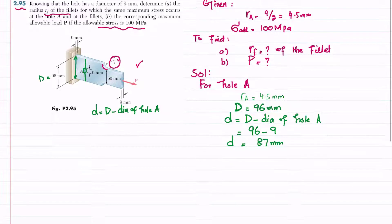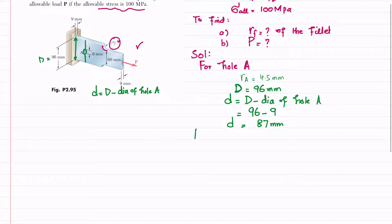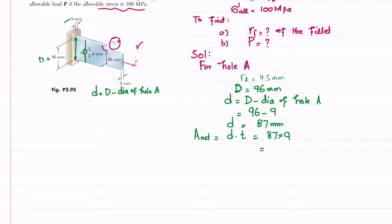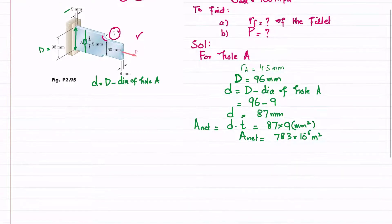The net area equals d times thickness: 87 times 9 millimeters, giving 783 millimeters squared, which converts to 783 times 10 to the power of minus 6 square meters.